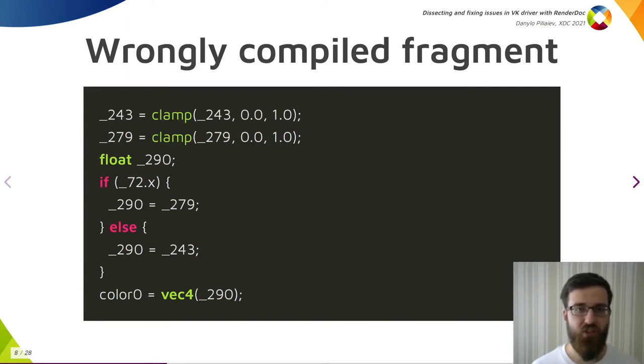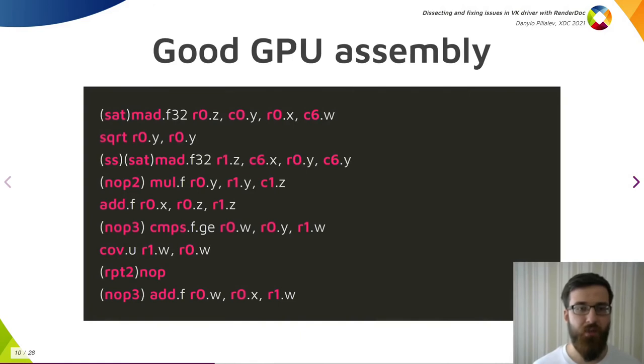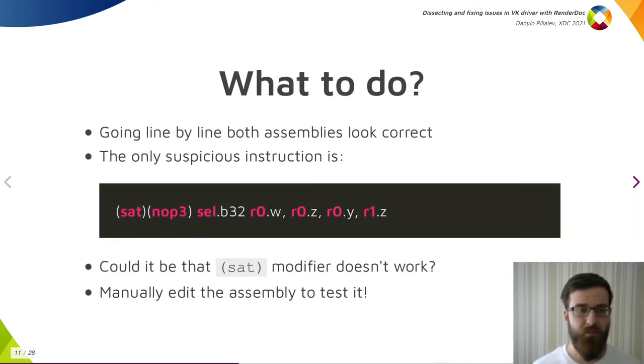We are left with roughly this snippet from the shader which is incorrectly compiled. Since it is an if statement which causes the issue, we will have to pay special attention to the corresponding instructions in the GPU assembly. I obtained the assembly with pipeline executable properties extension. This is the bad assembly from the code with the if statement. This is the good assembly where we removed the if statement. What could we do with them? Going line by line, both assemblies should produce expected results for them. The only suspicious instruction is sel, selection instruction, which corresponds to the if condition in the original code. We were getting unclamped values - they were above 1. It is not something that could be produced by saturation, which clamps the value between 0 and 1. So maybe saturation modifier doesn't work.